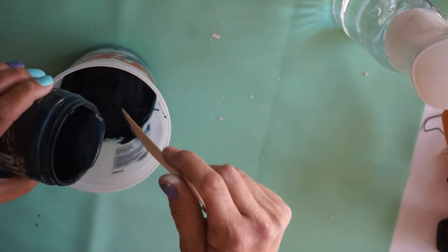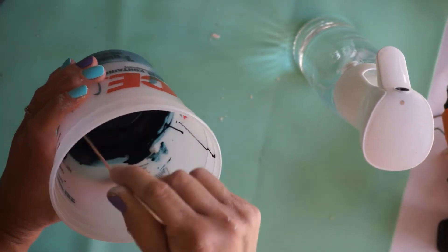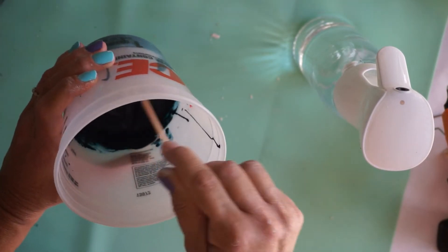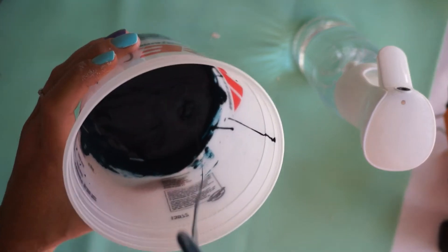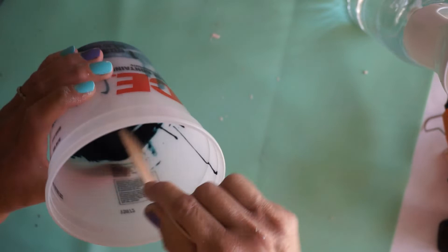So right now what I'm doing is I'm really thinning out this paint. It's very thick, and so I'm just squirting some water in there and getting it to a consistency I like. And you'll see this color come on pretty soon. I think it's absolutely gorgeous.